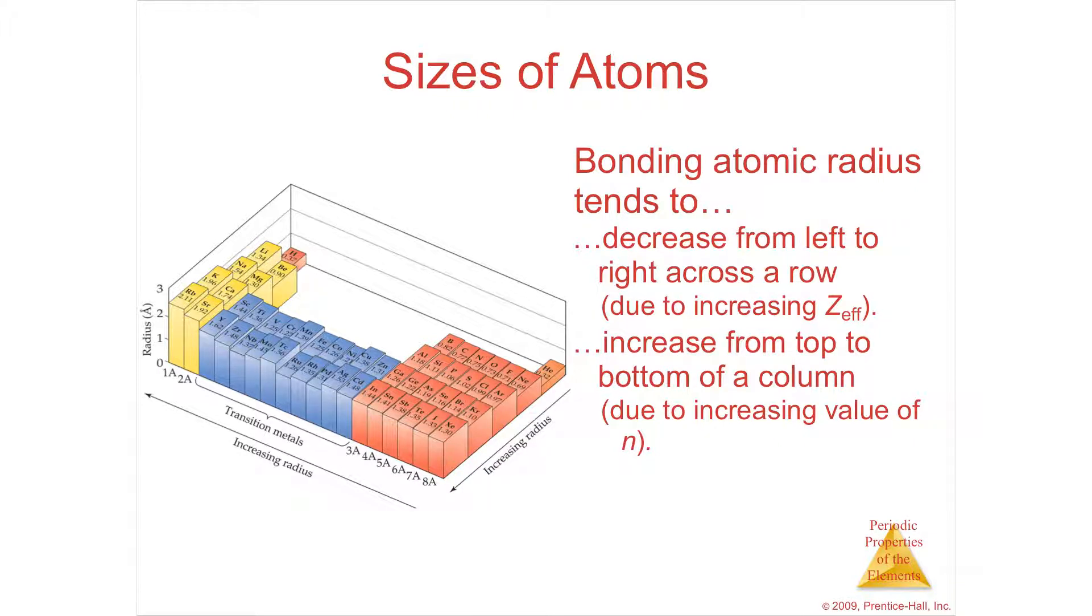Since it's not shielding, but yet you have an increasing number of positives, it's pulling in tighter. As you go from the left to the right of the periodic table, the atom sizes get smaller because the nucleus is pulling in tighter.